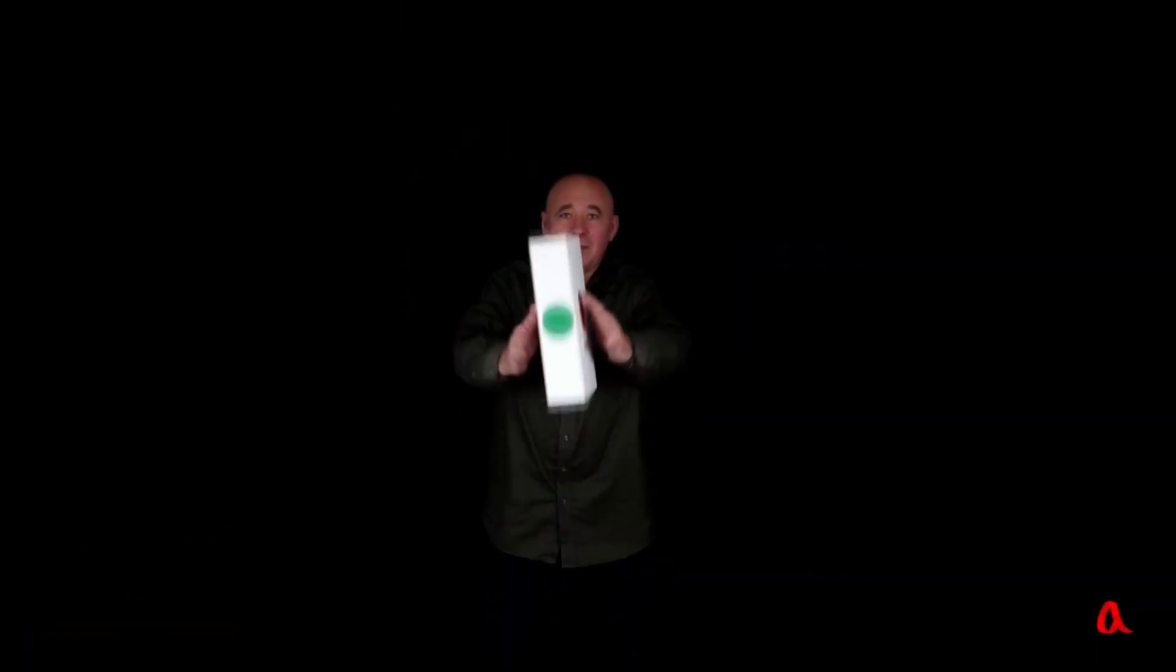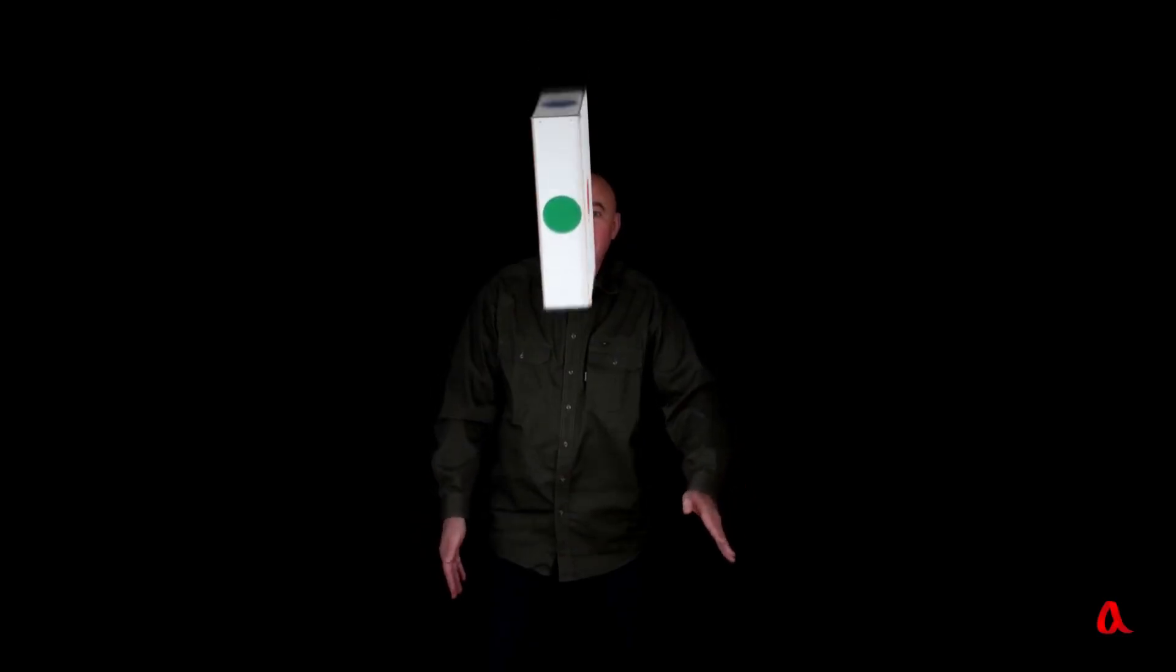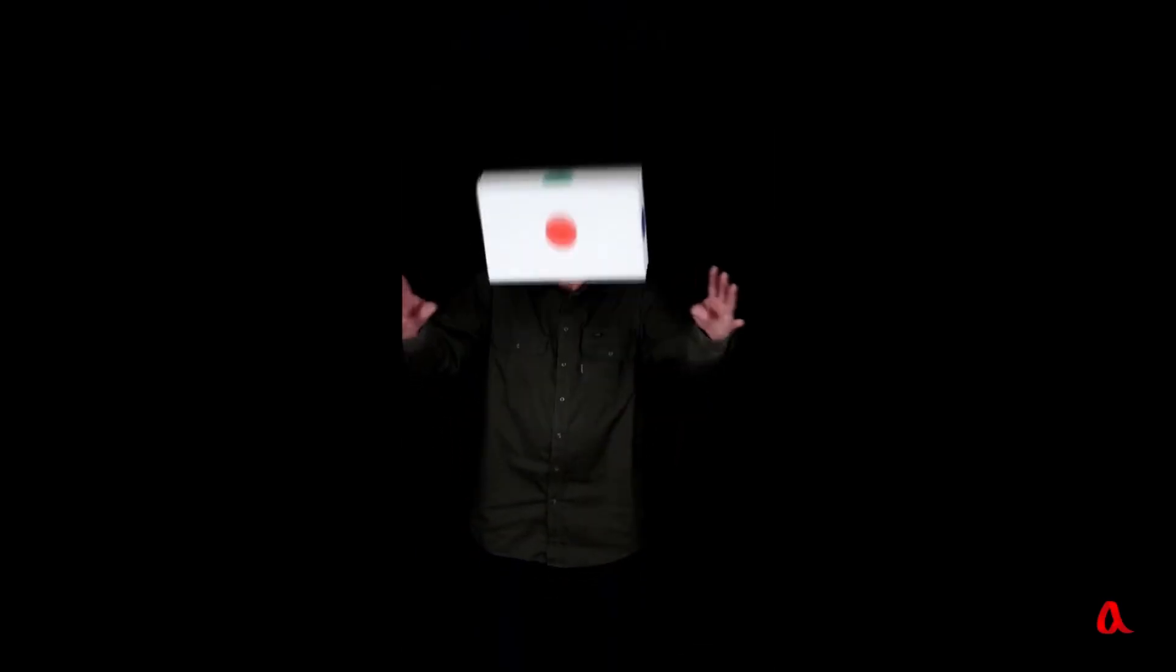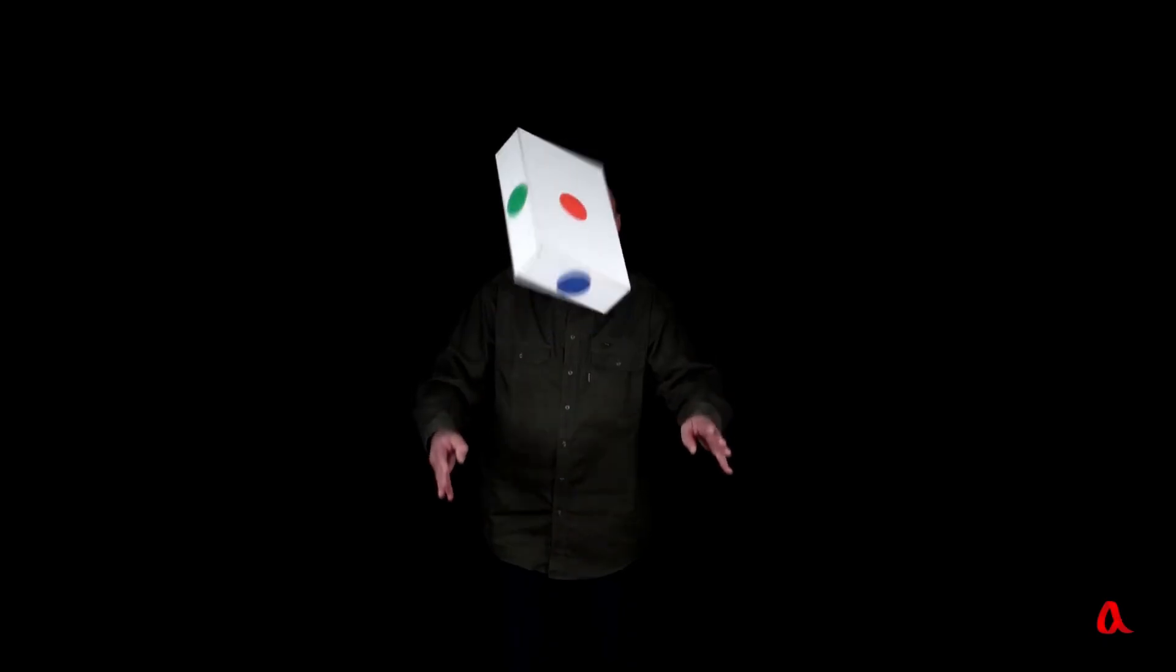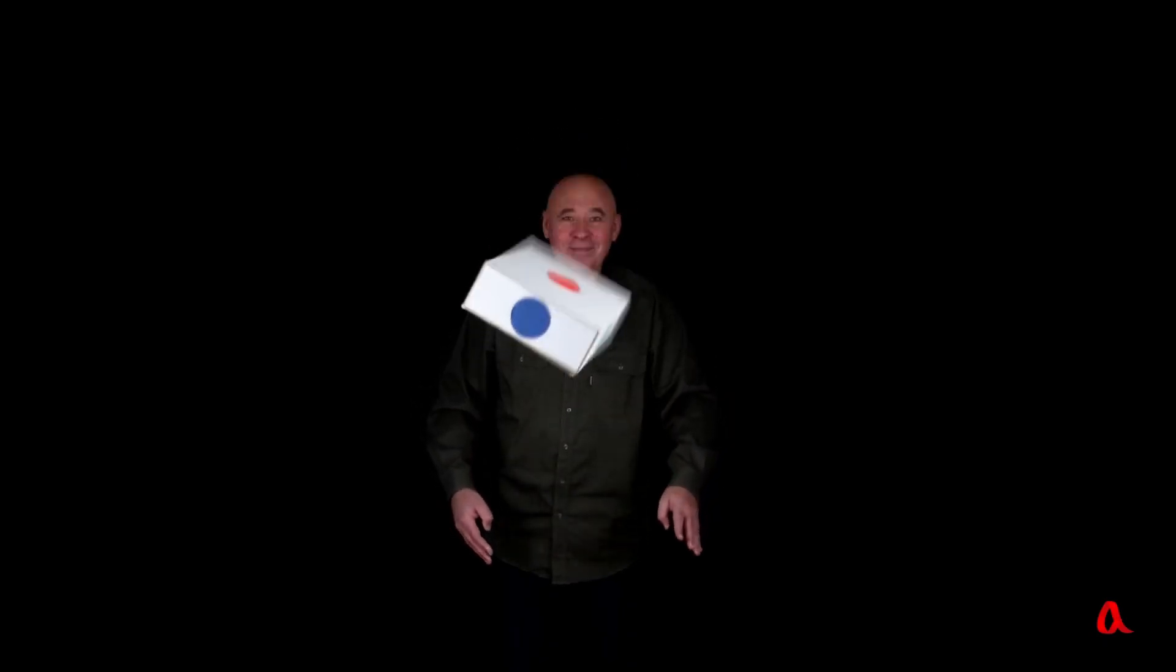Here I perform a rotation around the axis with maximum moment of inertia—the rotation is stable. Rotation around an axis with minimum moment of inertia is also stable. And now here is an axis with the average moment of inertia, and the box does not rotate steadily but instead flips abruptly in midair during its flight.